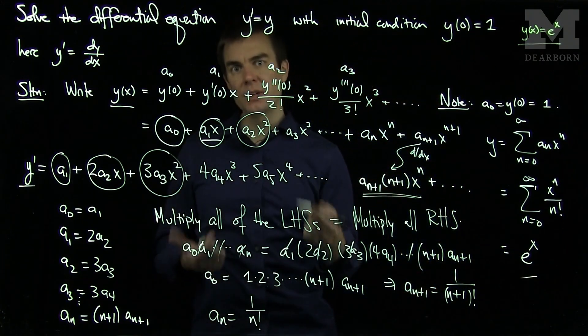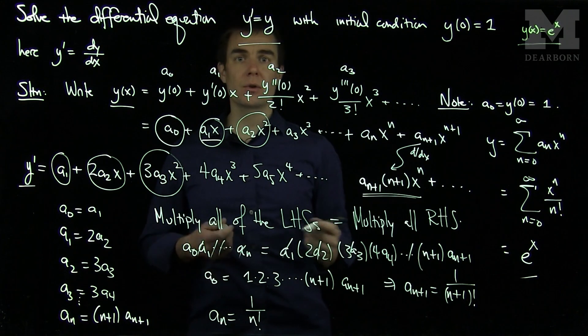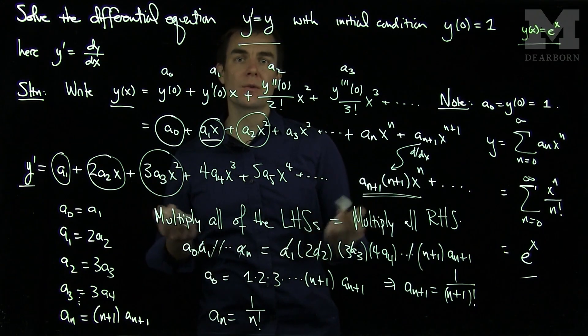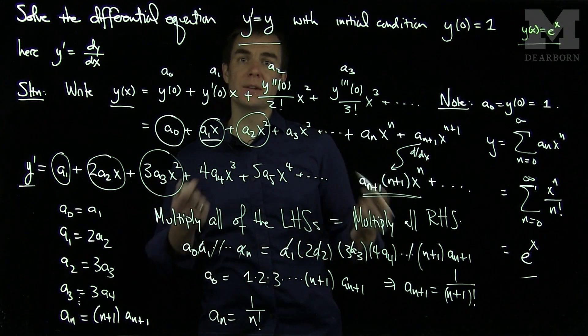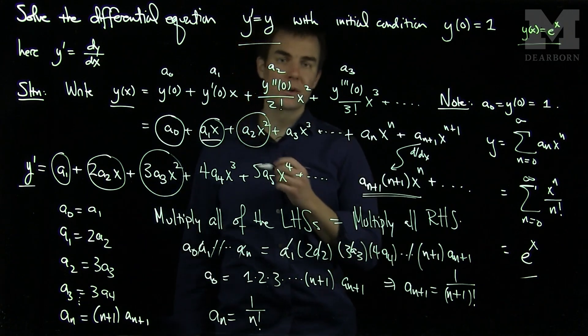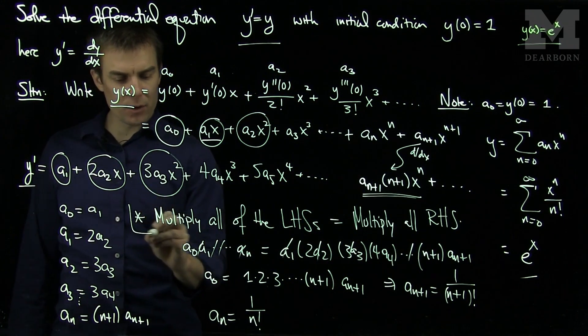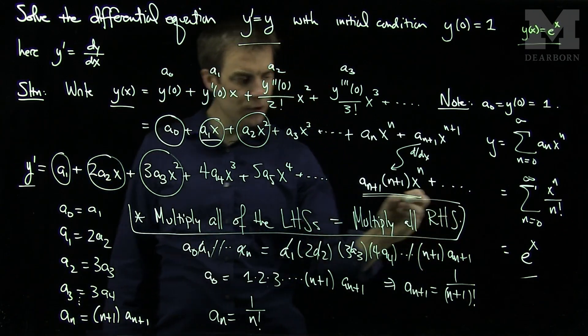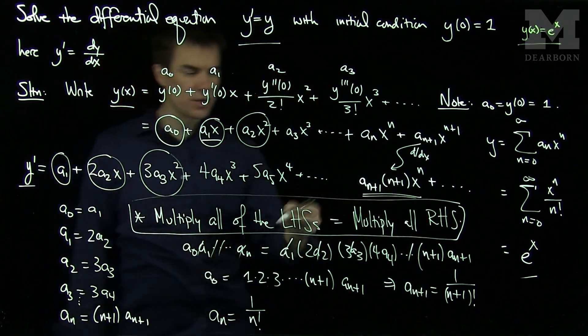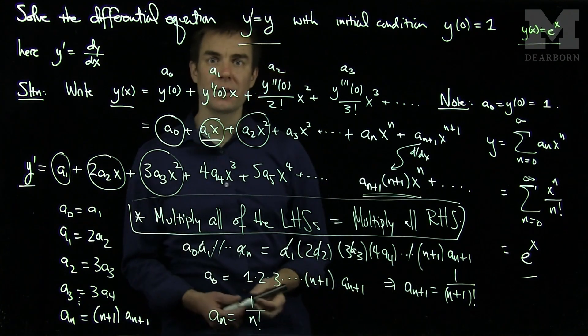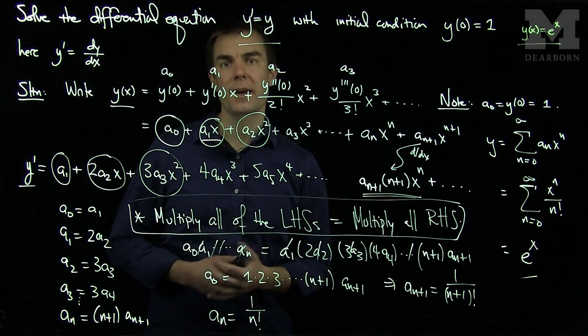And so we've established that y is equal to e to the x is a solution of this differential equation by writing down the Taylor series for y and plugging the Taylor series for y into the differential equation, equating the coefficients. And the essential ingredient in solving all these problems is that you'll multiply all the left-hand sides of your recursion by all the right-hand sides of your recursion, and you'll get lots of telescopic cancellation in your multiplicative product. Thank you very much.